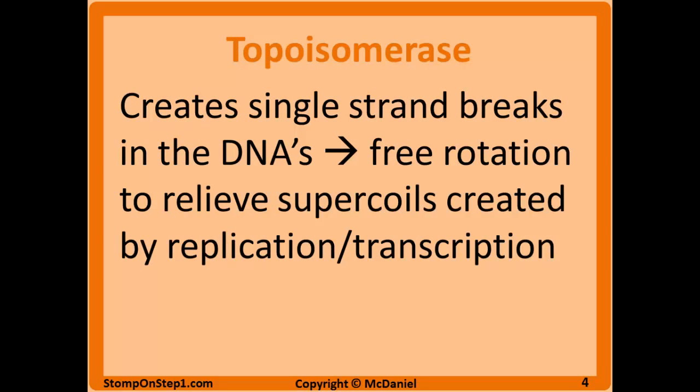Topoisomerase is the enzyme that creates single-strand breaks in the phosphodiester bonds within DNA to allow free rotation of the DNA and relieve supercoiling that is created by replication or transcription. As the enzymes and replication machinery are working on DNA, it's opening up origins of replication, and that change in shape can create supercoiling, sort of like how a telephone cord from an old-school telephone would get all wrapped up. Topoisomerase relieves this strain so DNA replication can continue without any problems.